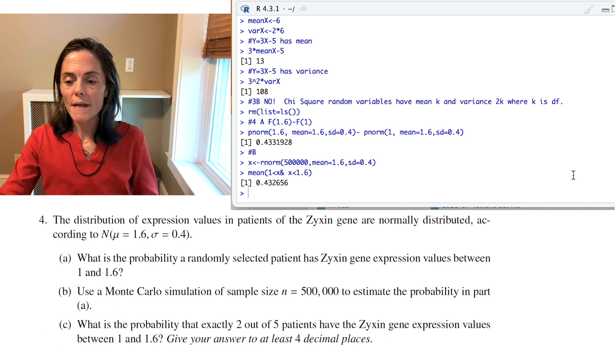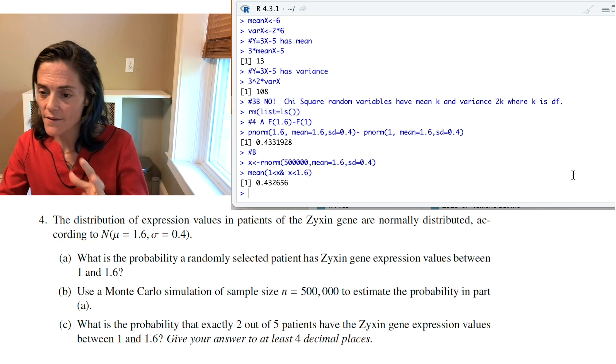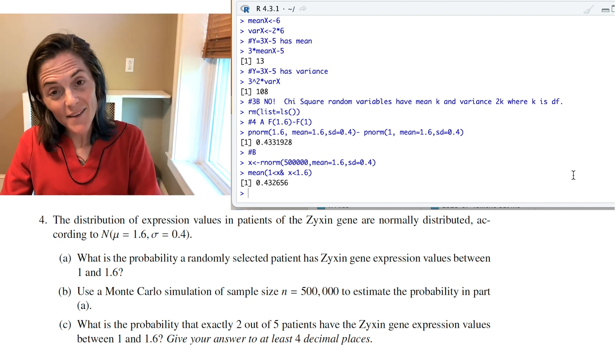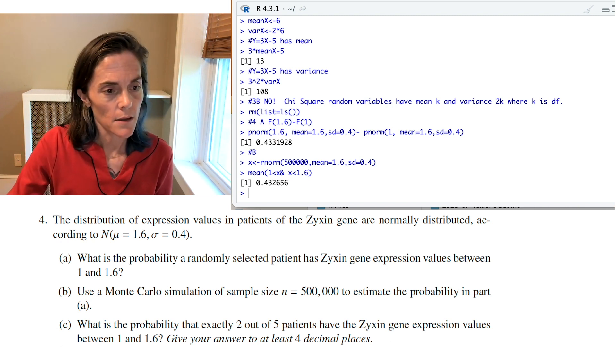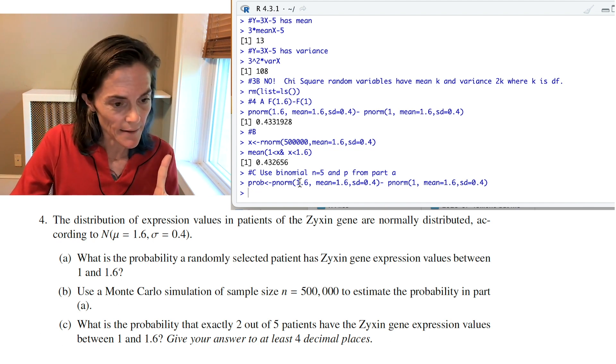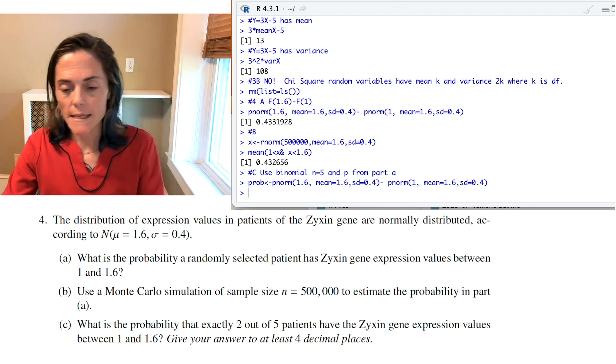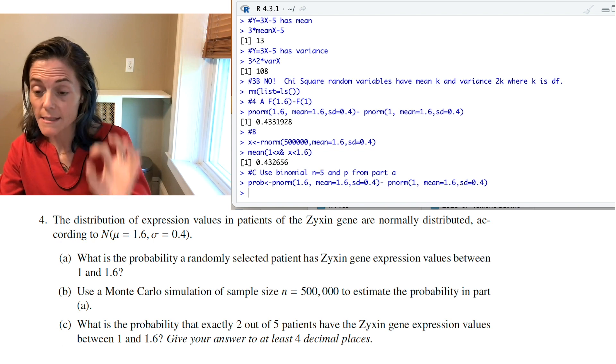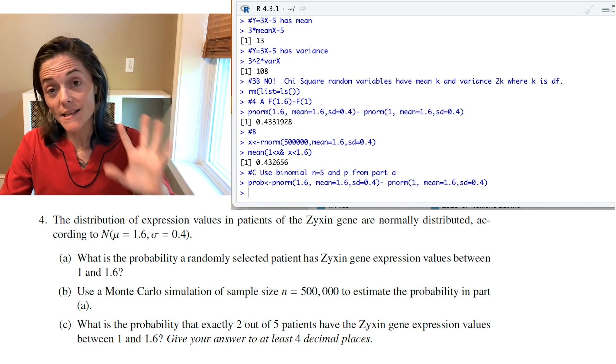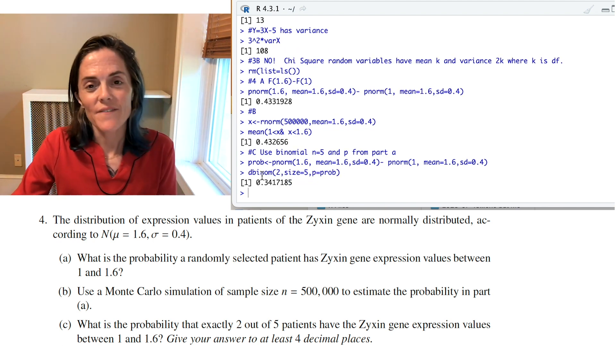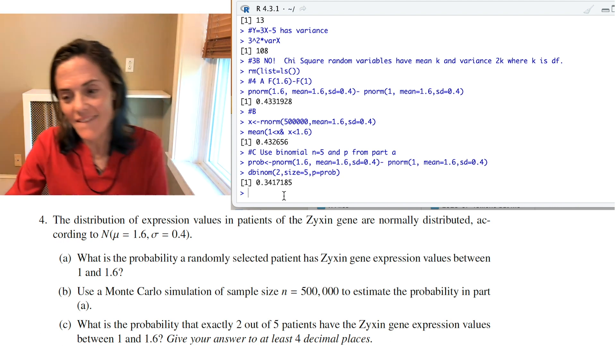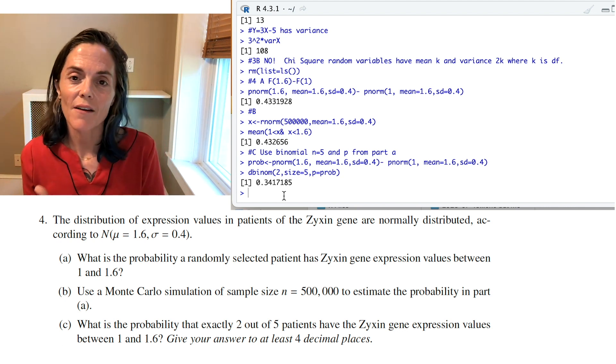Now, last one. What is the probability exactly two of the five patients have the gene expression values between 1 and 1.6? Here, we need to use a binomial distribution. The N is 5 and the P, well, we calculated from part A. So, the probability P is here. Okay. That was what we calculated from part A. And then, all we want is the probability that, say I call this capital X, capital X equals 2. And this is a discrete random variable. And so, we will have some positive probability here. The D prefix gives you the probability mass function. And you see, it's approximately 0.3417185. It says to round to at least four places. And certainly, I have enough there on my R.